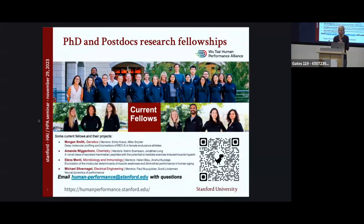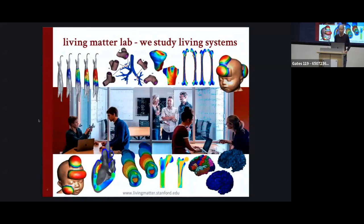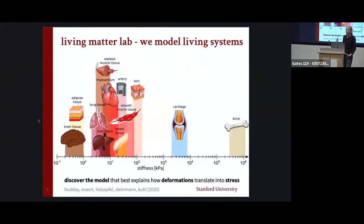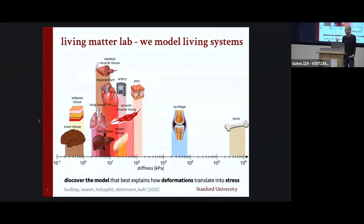Now I want to come to what we do in our group. We model and study living systems — the heart, bones, the brain, muscle, the lung. What's key to modeling these systems is understanding their mechanical behavior — specifically the stiffness, or how deformations translate into stress. If you think about performance and someone gets a hit to the head, we know the acceleration of that head impact and want to translate that into a force, calculate stress distribution across the entire brain, identify certain regions that are hit hard, and correlate them to function.